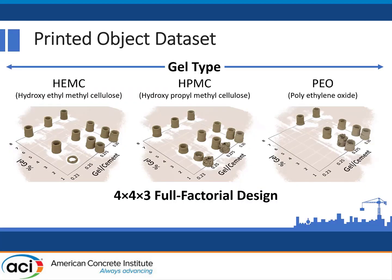We've completed a 4x4 full factorial design where we've looked at three different printing aids — gel-forming polymer-based printing aids. We varied the percent of polymer in the gel phase and varied the gel-to-cement ratio, where gel-to-cement ratio replaces water-to-cement ratio effectively. You can see with the naked eye, without any quantification, that there are differences in the printability of these model benchmark objects. We have domains where we could not print, domains of poor printability, and domains of rather good printability.